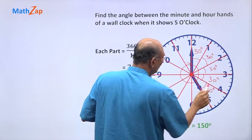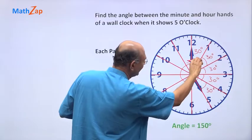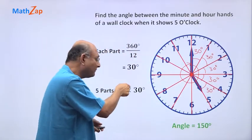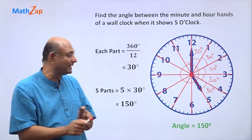And so from 12 to this 5, right? You have 5 parts. So 5 parts is 5 into 30 degrees, which is 150 degrees.